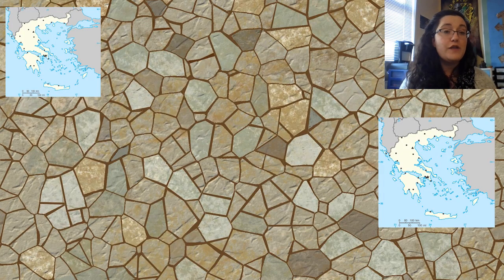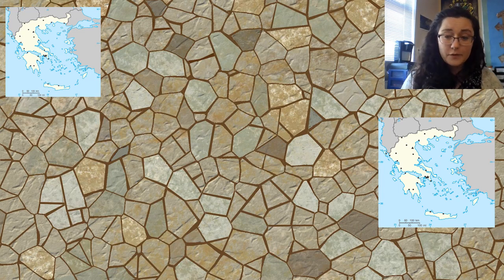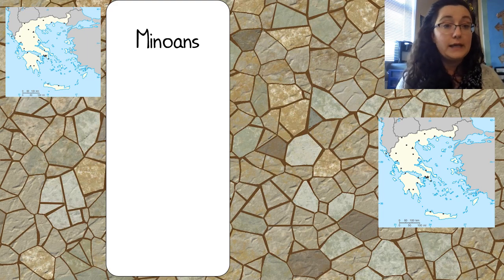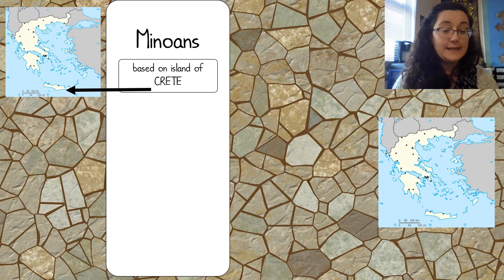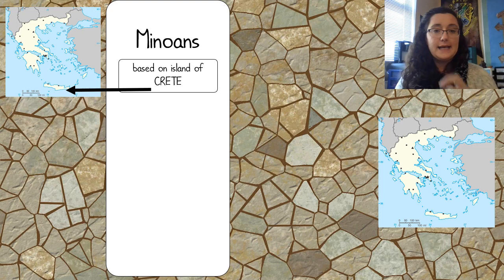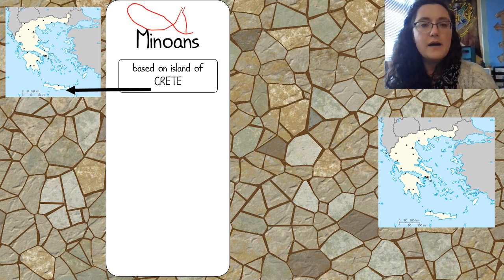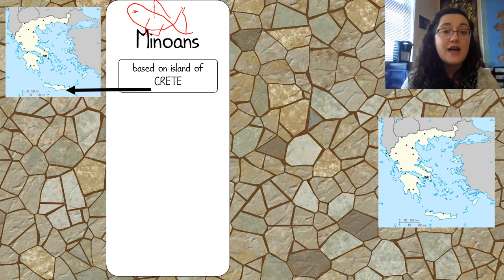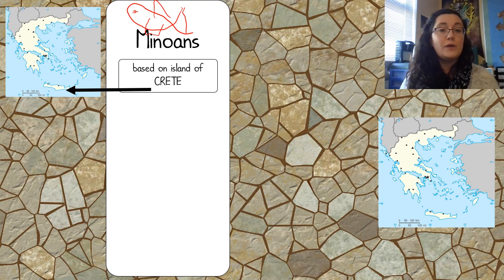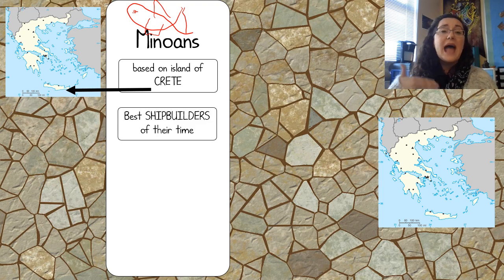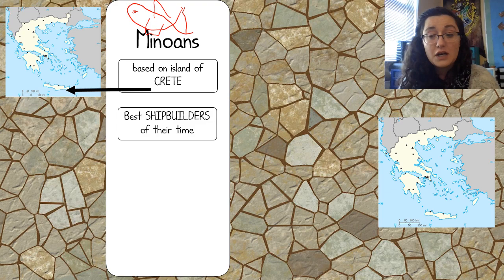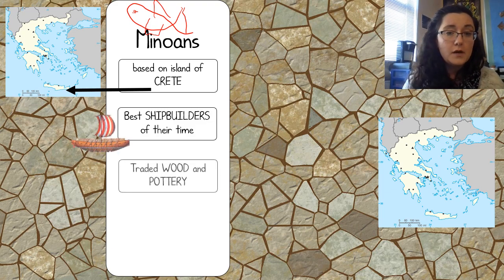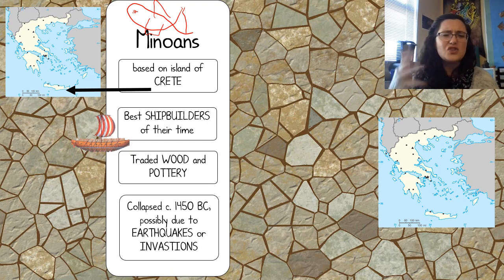Let's look at some of the earliest people that lived in and around what we now consider Greece. The first group is the Minoans. They didn't actually live on the mainland of Greece at all — they lived on the island of Crete. Draw a little fish above the Minoans, because 'Minoans' reminds us of minnows swimming around in the ocean. They were the absolute best shipbuilders of their time, probably because they lived on an island. They traded wood and pottery.